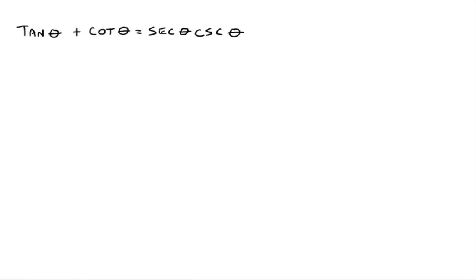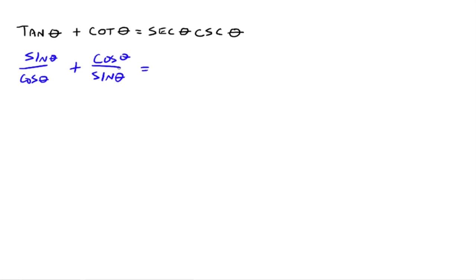Here's our first example. We want to verify that tangent theta plus cotangent theta equals secant theta times cosecant theta. Looking at it right away, it looks kind of tricky — but if we change everything to sines and cosines: tangent theta is sine theta divided by cosine theta. You must have the thetas in there; if you just write SIN and COS, that's not correct. Then cotangent theta becomes cosine theta over sine theta. We're going to leave the right side alone and work with the tangent and cotangent.